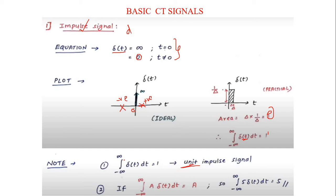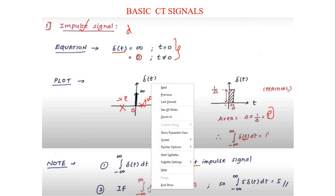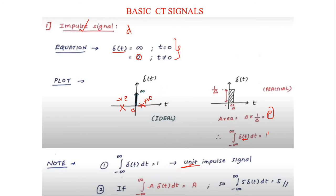The area of the impulse signal is: integral from minus infinity to infinity of δ(t) dt = 1. For example, if I have some amplitude A, keeping A as a constant, the overall integration gives A, since δ(t) exists only at t=0 with value 1. Similarly, if instead of A we use 5, such questions are helpful from a competitive exam point of view.